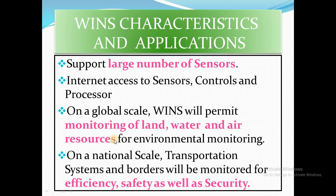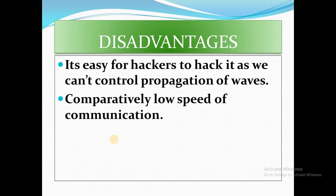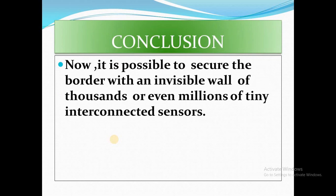WINS provides good security at a low price on a national scale, and transportation systems and borders are monitored for efficiency, safety, and security. Disadvantages include: it is easy for hackers to hack, the propagation of waves cannot be fully controlled, and it has comparatively low communication speed. In conclusion, it is now possible to secure borders with an invisible wall of thousands or even billions of tiny integrated sensors, reducing soldier involvement significantly.